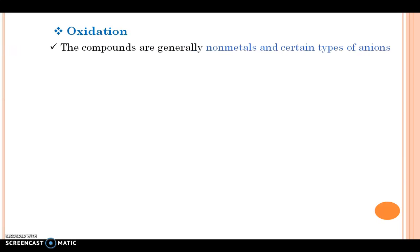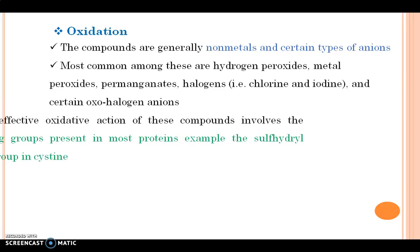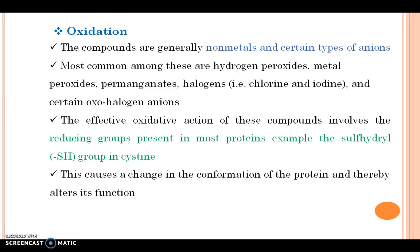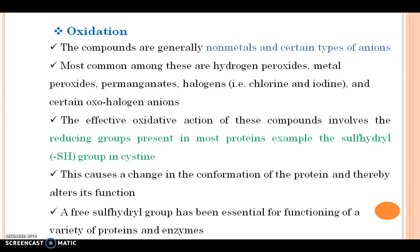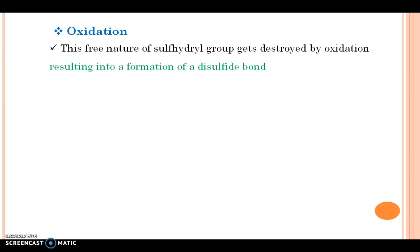First is about oxidation. The compounds which produce antimicrobial action by oxidation mechanisms are generally non-metals and certain types of anions. Most common among these are hydrogen peroxides, metal peroxides, permanganates, halogens, and certain oxohalogen anions. The effective oxidative action of these compounds involves the reducing groups present in most proteins, for example the sulfhydryl group in cysteine. This causes a change in the conformation of the protein and thereby alters its function. A free sulfhydryl group is essential for functioning of a variety of proteins and enzymes. This free nature of the sulfhydryl group gets destroyed by oxidation, resulting in the formation of a disulfide bond.